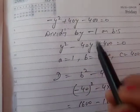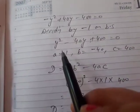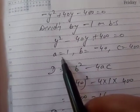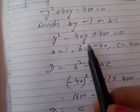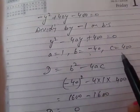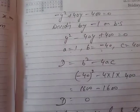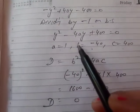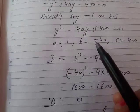When we compare it to our standard form, a is equal to 1, b is equal to minus 40, and c is equal to 400. We will take the discriminant to find if it is possible to find the solutions.